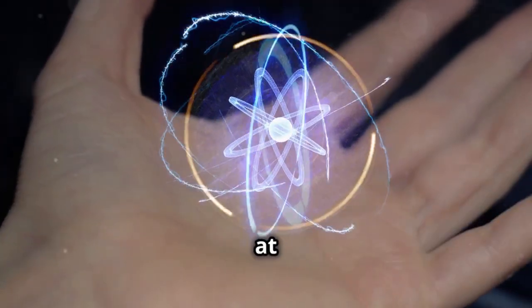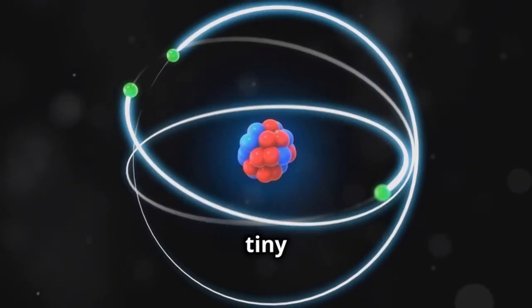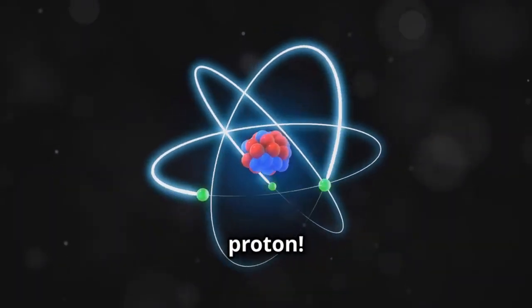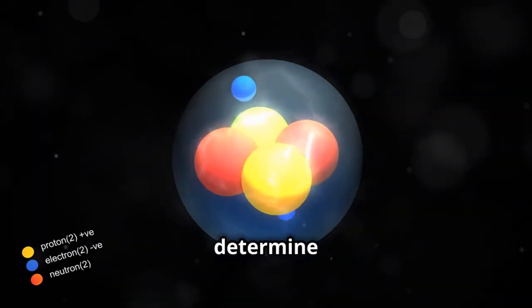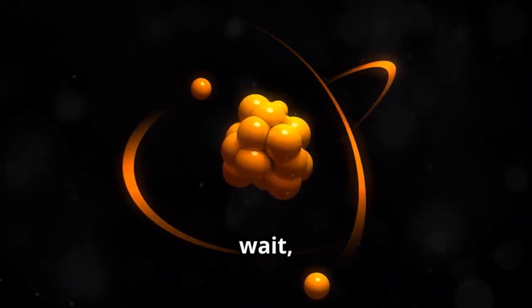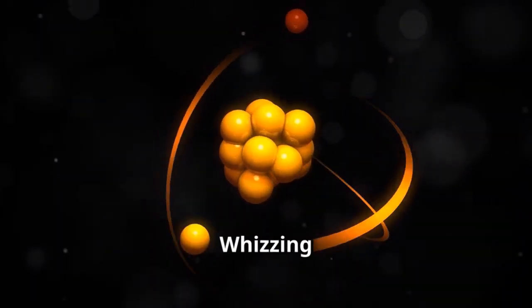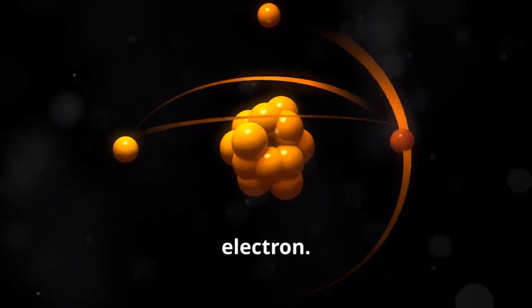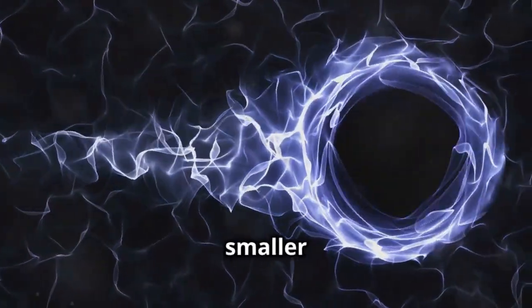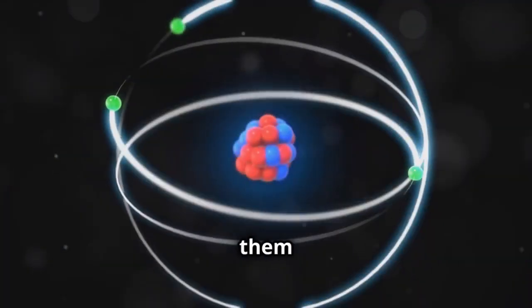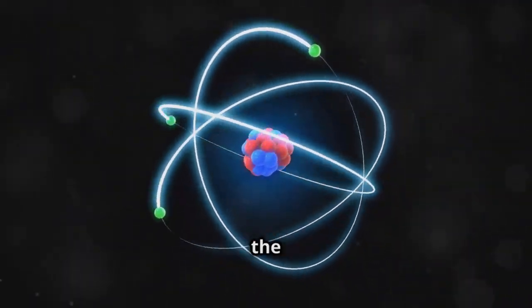Now let's zoom in on hydrogen's structure. Like all atoms, hydrogen has a nucleus at its center. What's inside this tiny nucleus? One single proton. Protons are positively charged particles and they determine the element's identity. But wait, there's more. Whizzing around the nucleus is a single electron. Electrons are negatively charged particles and they're much smaller than protons. Think of them as tiny speedsters orbiting the nucleus like planets around a star.